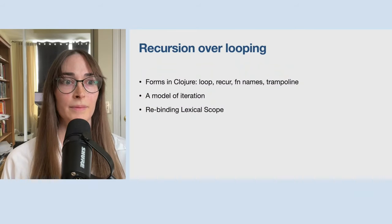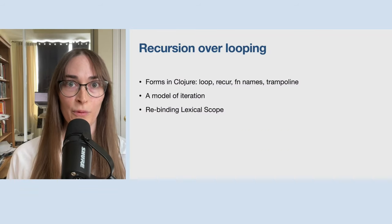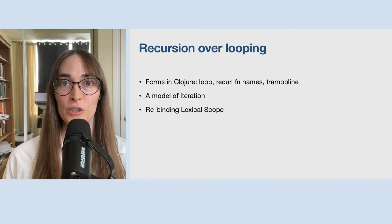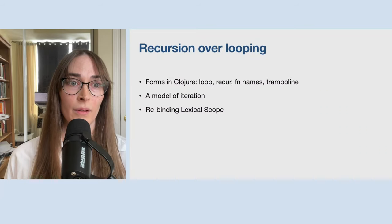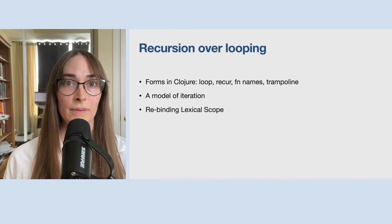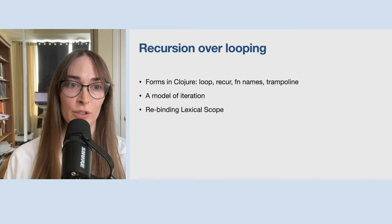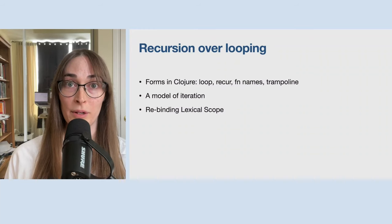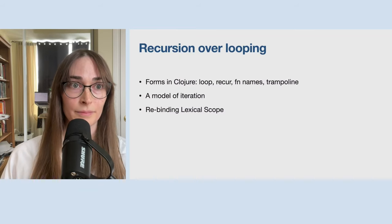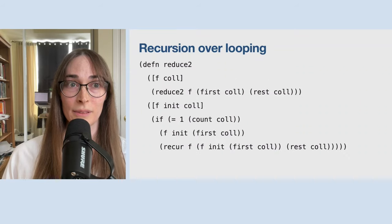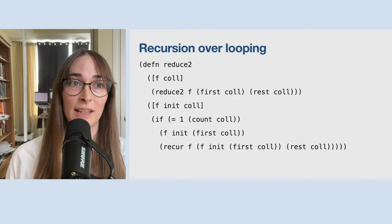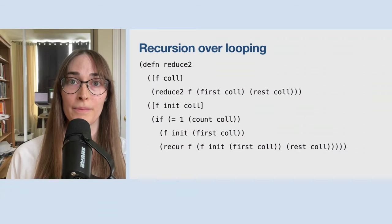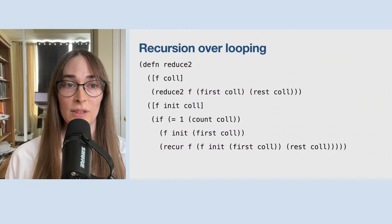The basics are: recursion over looping, functions over objects, and transformations over instructions. In Clojure we have the loop form, but it's not really different from recursion in other programming languages. We get two important things from recursion: a model of iteration, and a reoccurring rebinding lexical scope — a fancy way of saying we get function parameters for each recursive call. We can use recursion to rebuild something like a classic reduce in Clojure, which collapses a collection into a single value using a function.